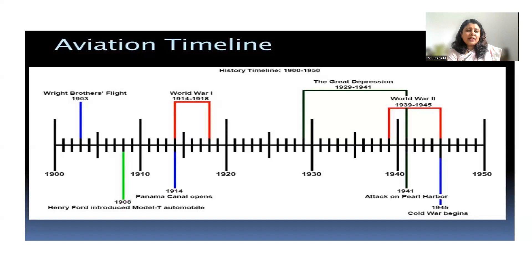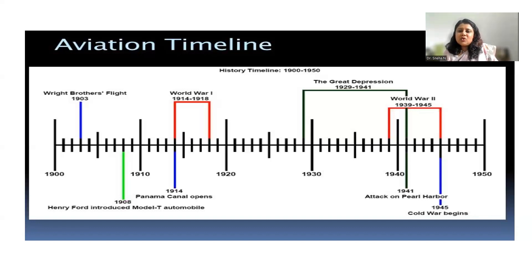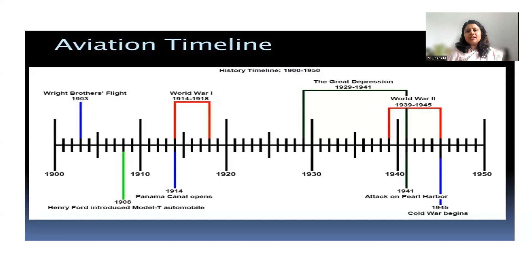On the aviation timeline, the Wright Brothers' flight was the beginning of aviation history in the world. In the 1900s, many attempts were made for flight to take off, which were halted by the onset of World War I between 1914 to 1918, followed by the Great Depression between 1929 to 1941. Post that, the Second World War between 1939 to 1945, with the attack on Pearl Harbor, brought about another period — the Cold War, which began in 1945.